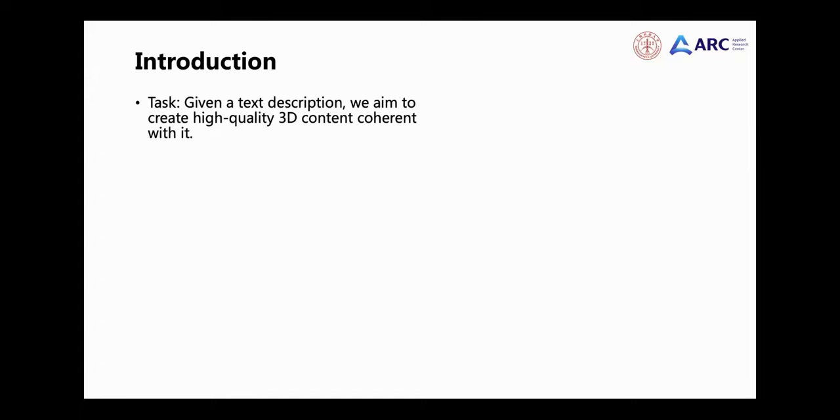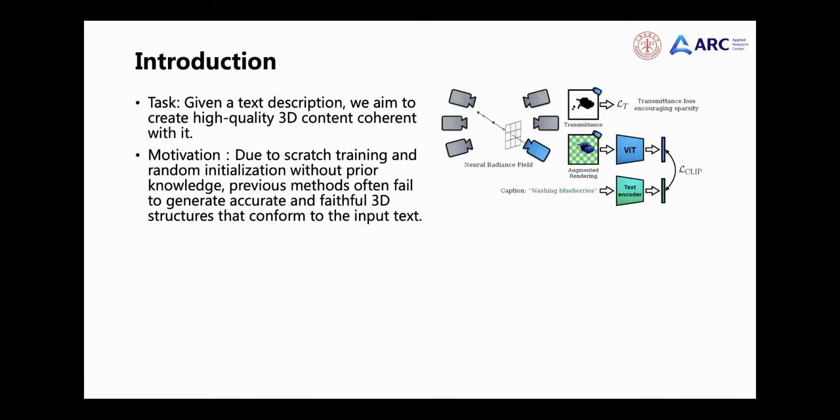This paper addresses the task of text-based 3D content creation, which aims to generate high-quality 3D content that matches a given text description. Previous work often used CLIP-based optimization by randomly initializing a 3D representation and rendering it from multiple viewpoints, using the CLIP similarity between the rendered images and the text description as an objective function for optimization.